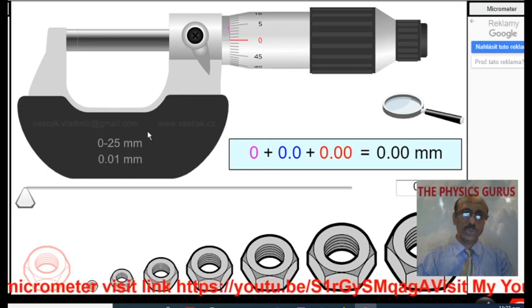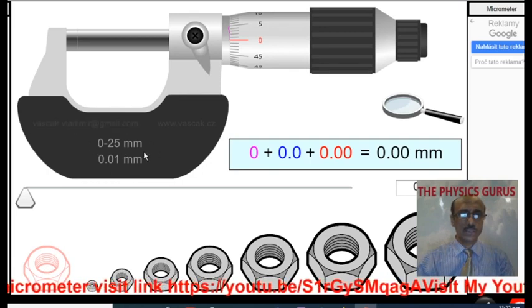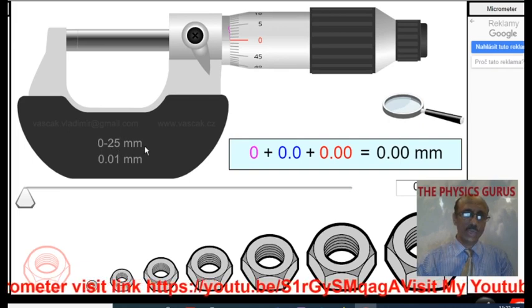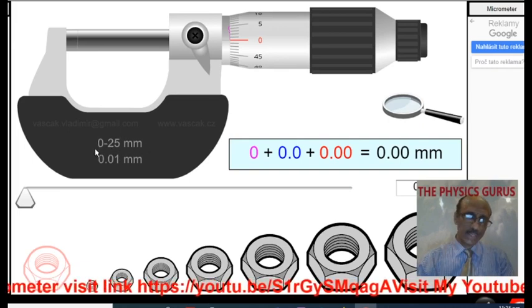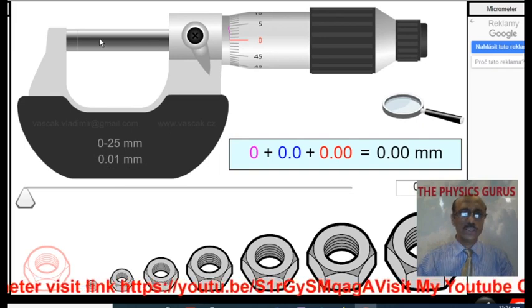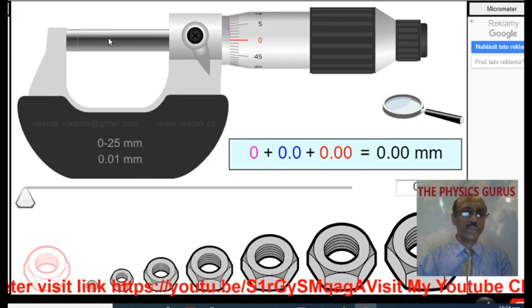I have already told you that this is the part on which there is written a range. The micrometer has a range from 0 to 25 mm normally and 0.01 is the least count. Now this is the object holder.